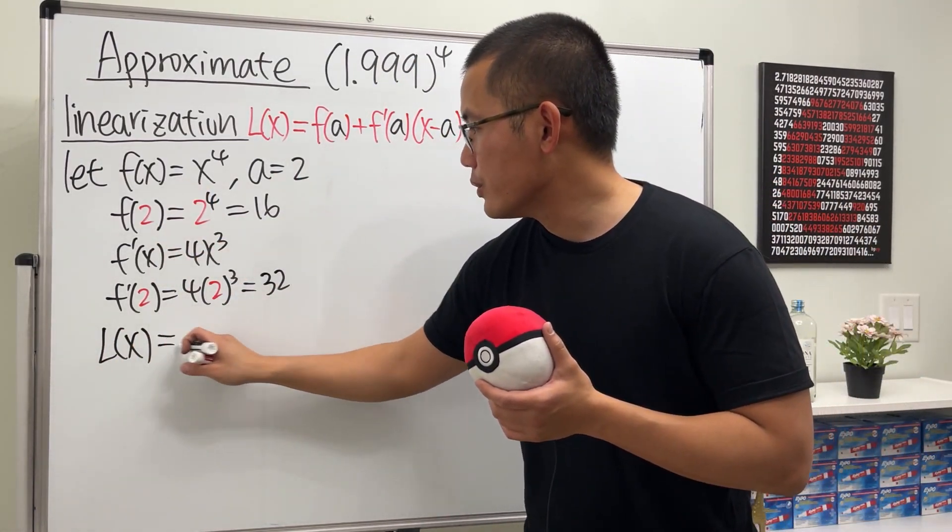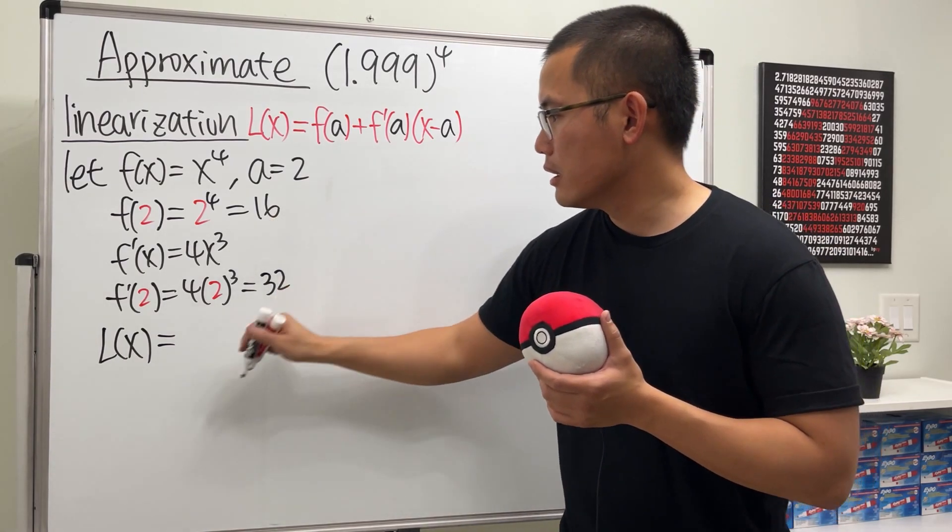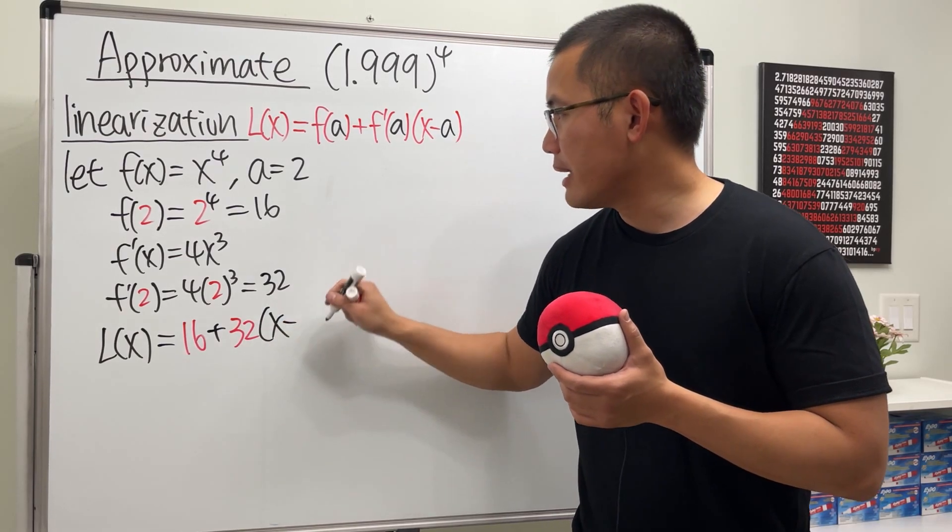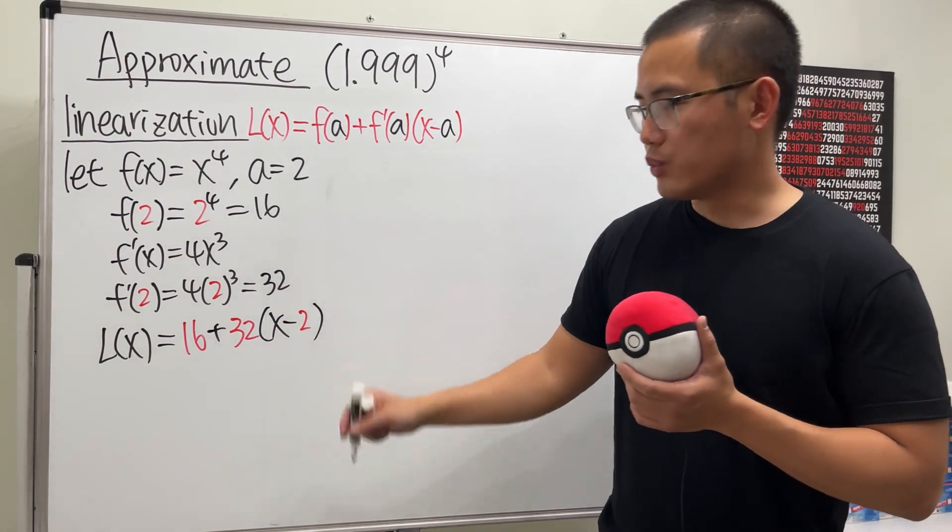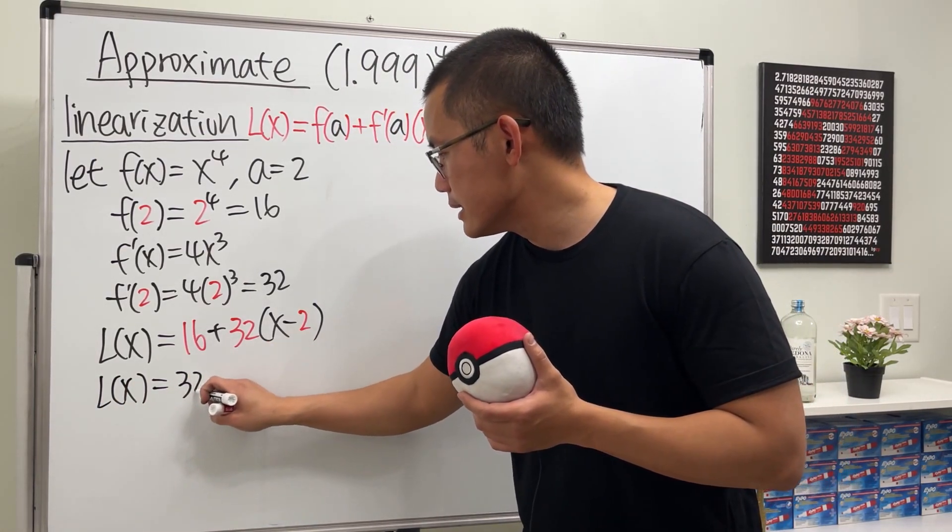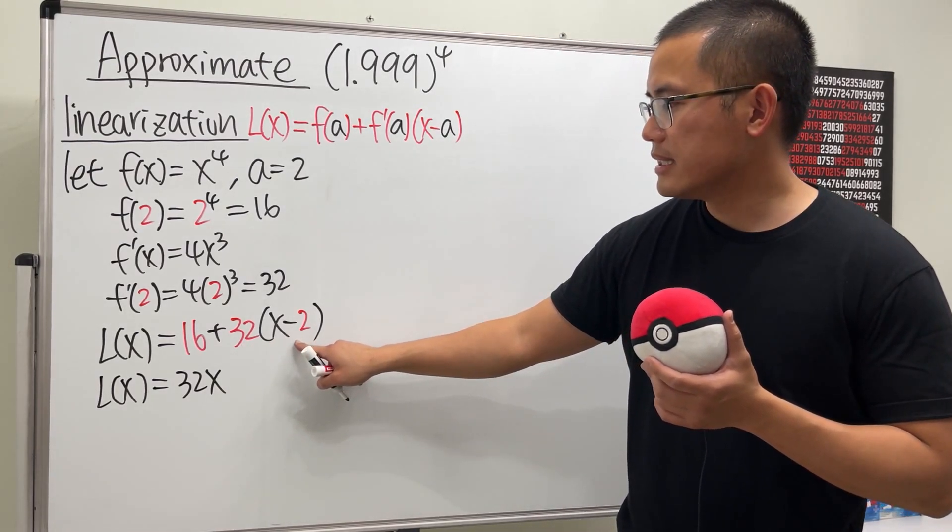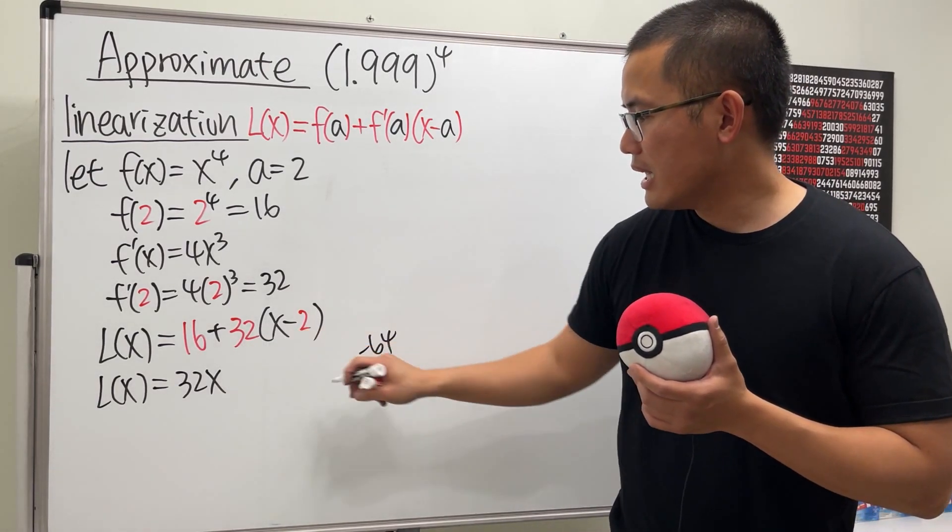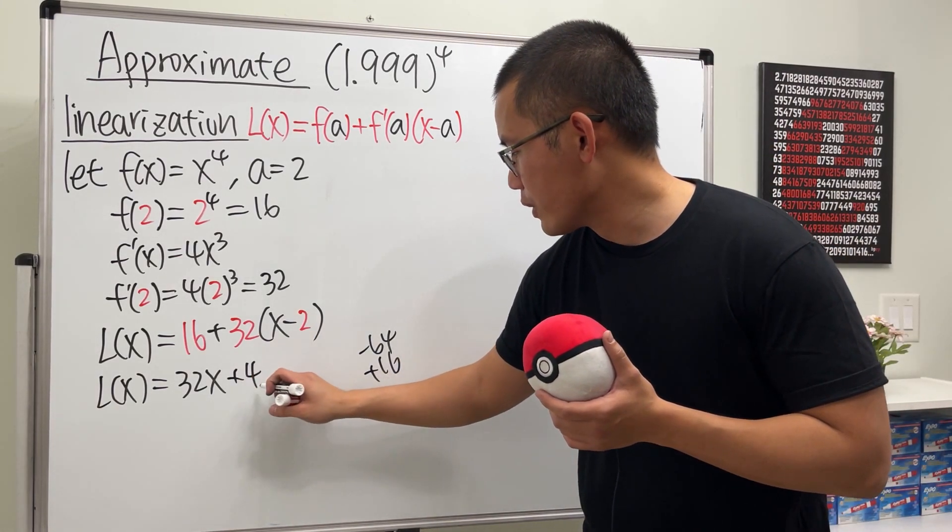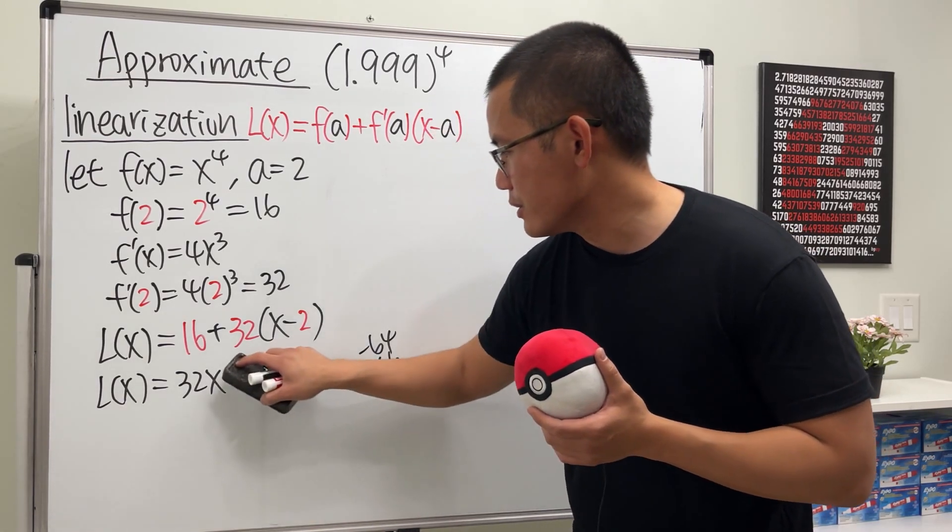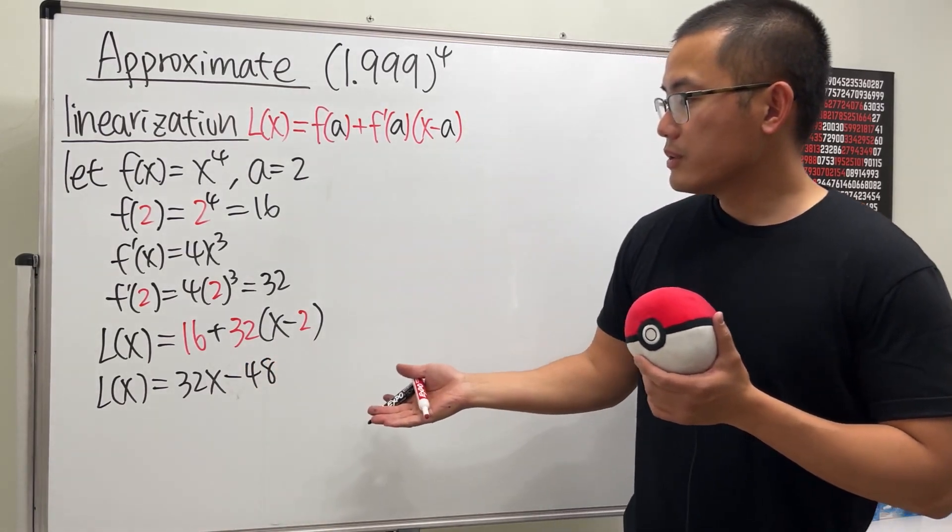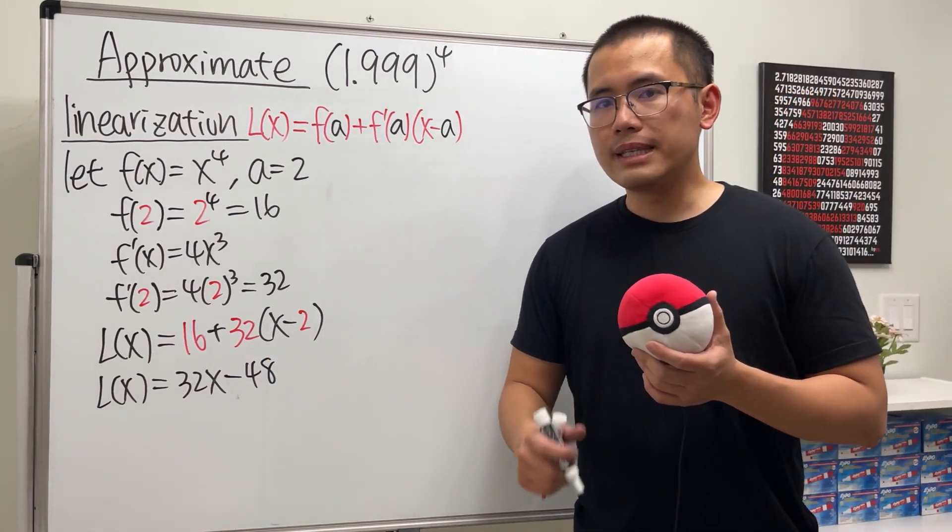Ladies and gentlemen, linearization for this function at 2 is L(x) = 16 + 32(x - 2). Let's work this out: L(x) = 32x - 64 + 16. We should get -48, so L(x) = 32x - 48. That's what we have, but now what exactly do we do next?